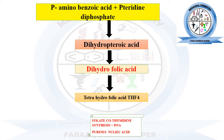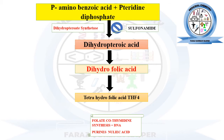The different enzymes involved in this entire pathway: in the first step, the combination of para-aminobenzoic acid and pteridine diphosphate to convert into dihydropteroic acid, the enzyme dihydropteroate synthetase is involved. The sulfonamide drug will act on this step — it will inhibit the dihydropteroate synthetase enzyme and ultimately block the synthesis of dihydropteroic acid, so the entire pathway will not proceed. In this way it will inhibit the growth of the bacterial cell.